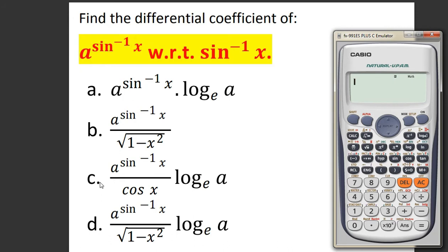Let us think about option number c — the case is the same; we cannot take negative value or zero for a. In option number d, the value of x should not be zero or negative, and the value of x should lie between minus 1 and plus 1 to get a finite value. We are going to choose a value of x such that all the options give different and finite values. Let us take the value of a equals to 2 and the value of x equals to 0.5, so all the conditions will be met.